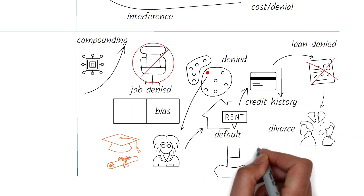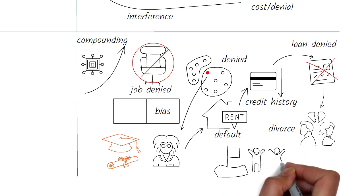which causes financial tension in the family and her husband divorces her, leaving two young children at the mercy of the state, all because of a wrong algorithmic decision early on.